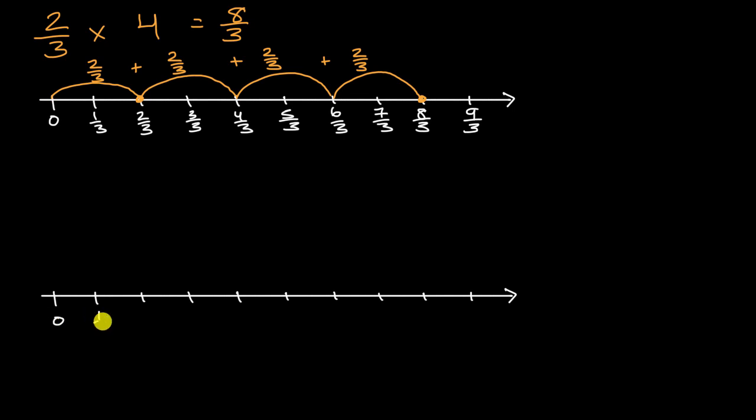So zero, one half, two halves, three halves, four halves, five halves, why did I write five, six? My brain is going ahead. Five halves, six halves, seven halves, eight halves, and nine halves.